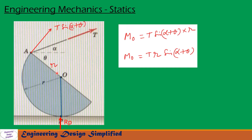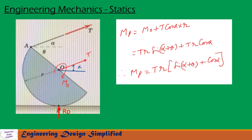First, let us find the moment due to T about O. T is acting at angle alpha from horizontal, and the angle between horizontal and line OA is theta. The reaction Rp acts vertically upward and creates no moment about O, so only force T contributes. The component of T perpendicular to line OA is T·sin(alpha + theta), and the distance from A to O is r. Therefore, Mo = Tr·sin(alpha + theta).